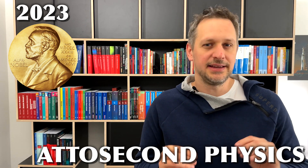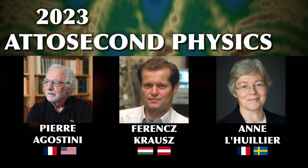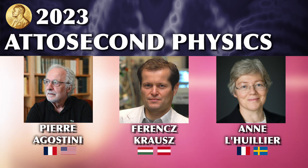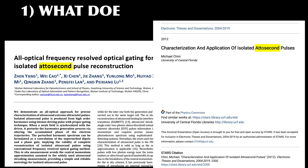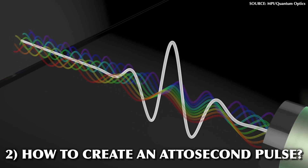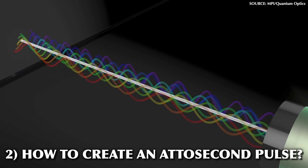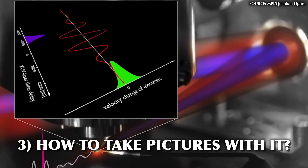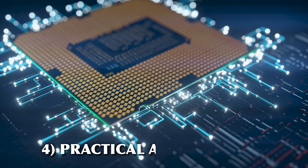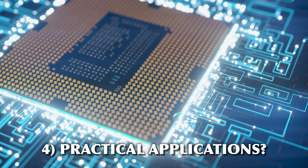The 2023 Nobel Prize in Physics has just recently been awarded to three scientists pioneering the field of attosecond physics. If you're interested in what that even means and why you should care, that's exactly what I will discuss in this video — more precisely, what does attosecond even mean, how to create an attosecond laser pulse, how we can use those to take pictures of quantum objects like electrons within atoms, and what practical applications this can be used for.